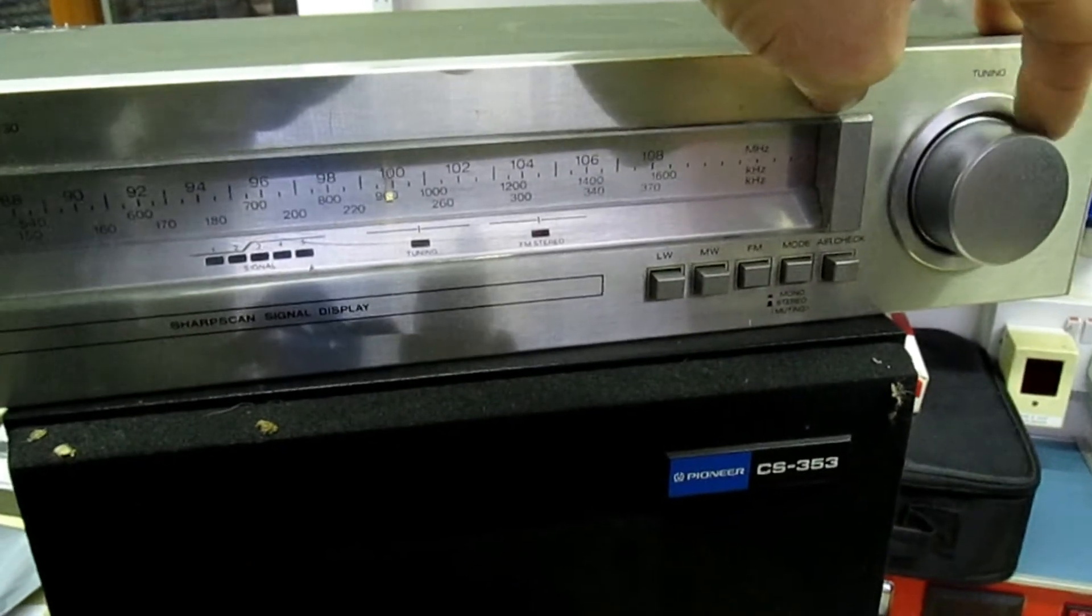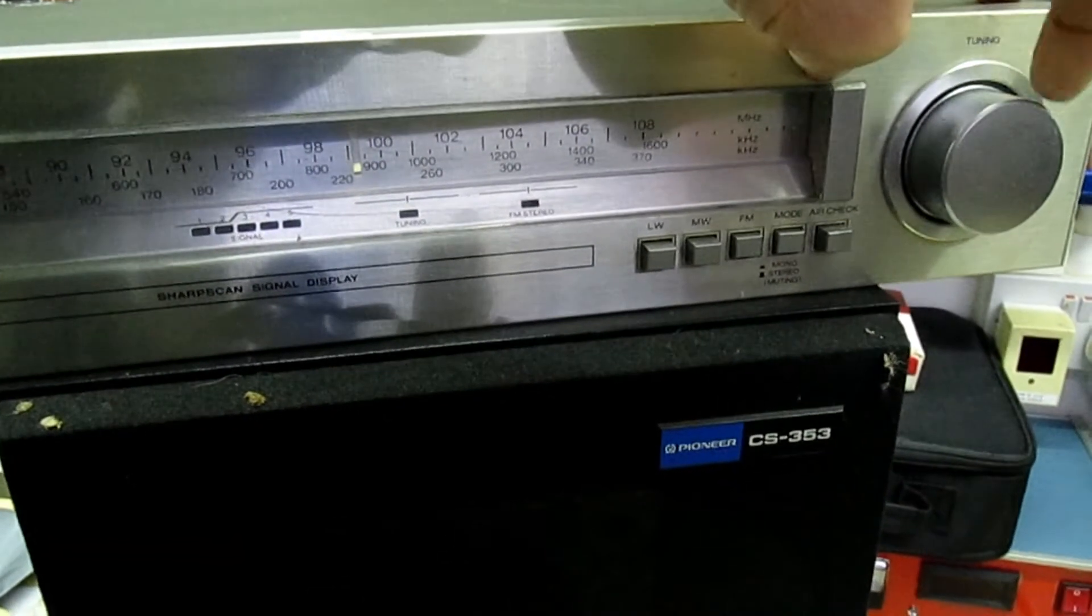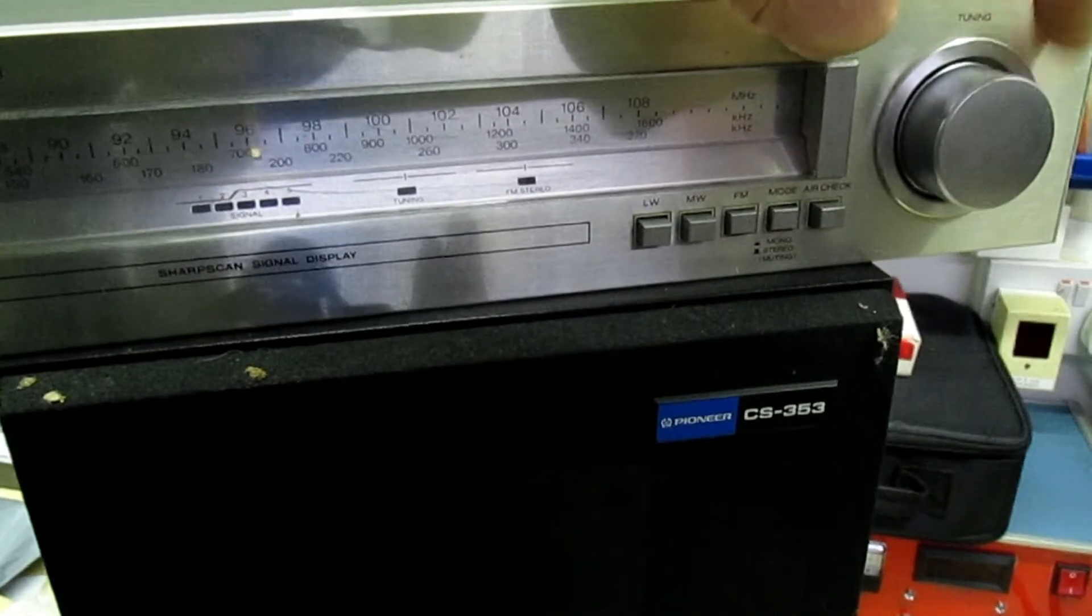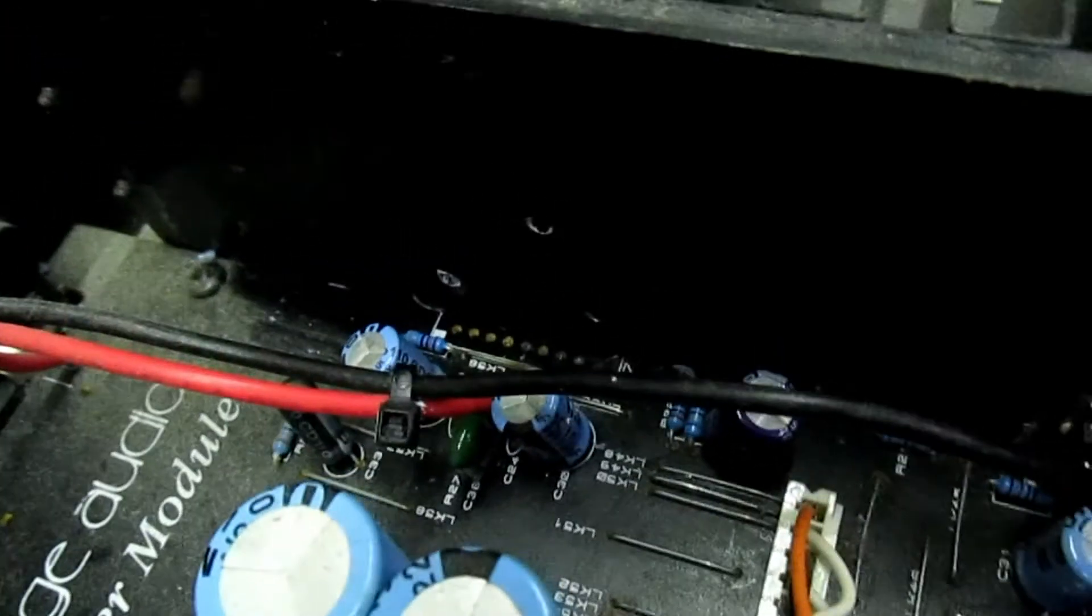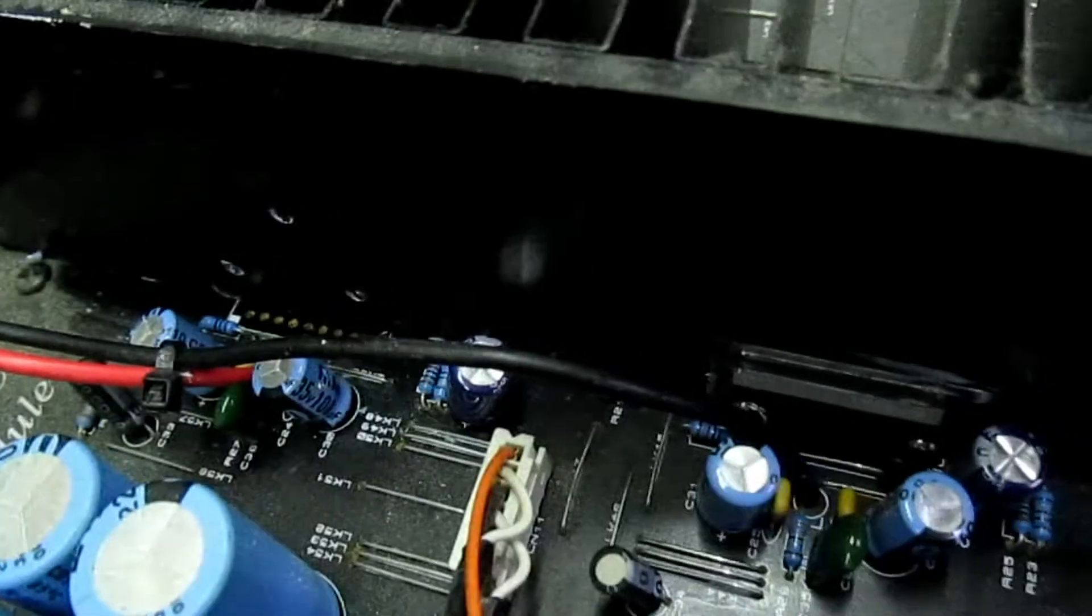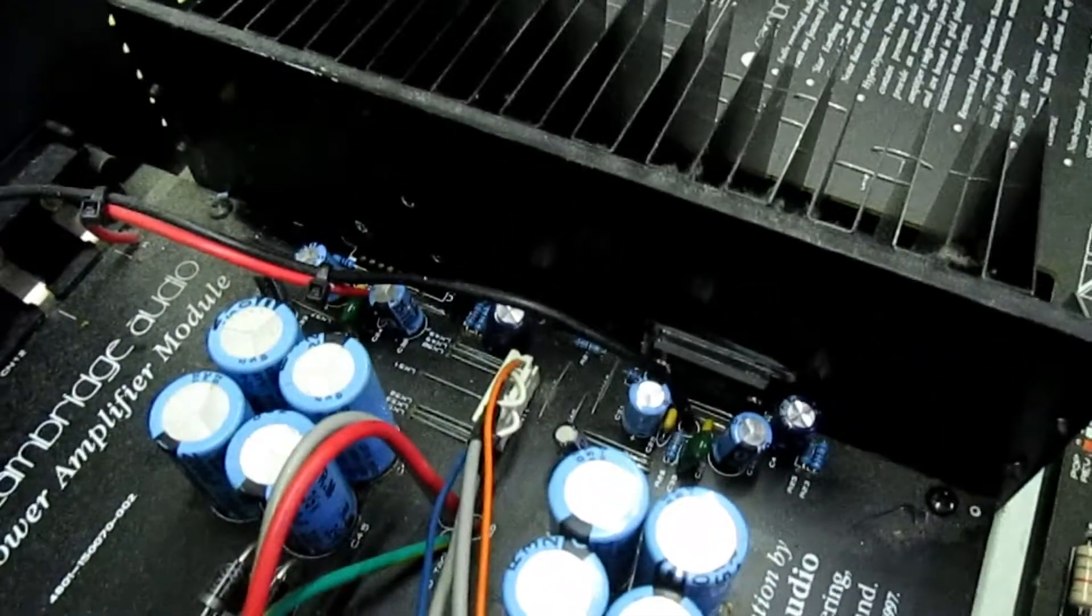So there you go, the amplifier is working just on one channel because I've removed the faulty IC. What I'm going to do now is fit the modified IC and we'll switch it on, see what happens.